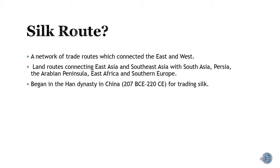Before discussing about the passes, we should know about the Silk Route. We are going to discuss about its networks, its land routes, and where it began. The Silk Route basically connects the east and west. It also connects East Asia and South Asia with Persia and the Arabian Peninsula, and also connects East Africa and Southern Europe. The Silk Route began in the Han dynasty in China, between 207 BCE to 220 CE, for the purpose of trading silk.